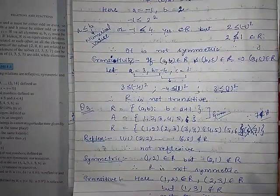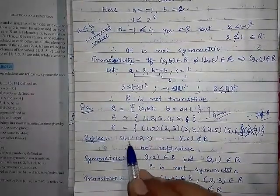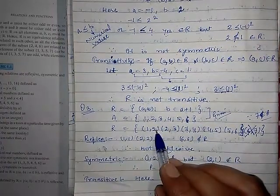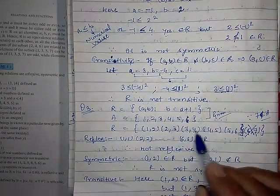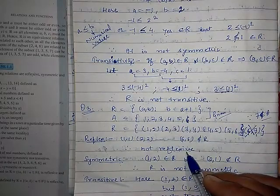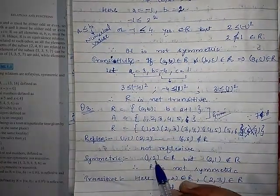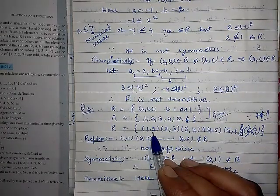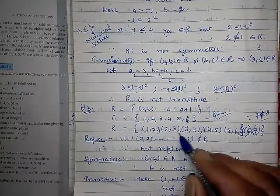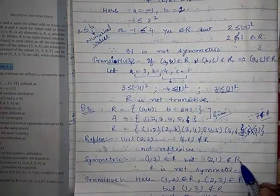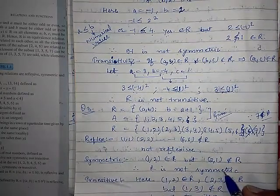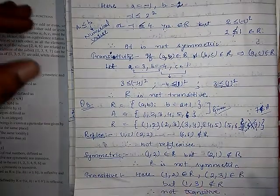For reflexivity, (1,1),(2,2),(3,3),(4,4),(5,5),(6,6) should all belong to R. But none of these are there in the relation, so therefore R is not reflexive. For symmetry, (1,2) is in R so (2,1) should be there. But (2,1) does not belong to R, so R is not symmetric.